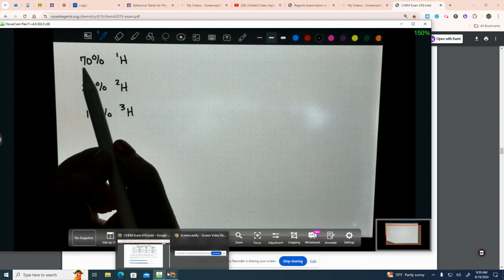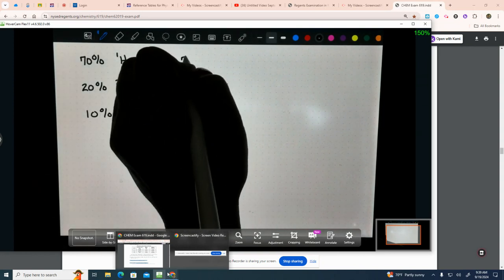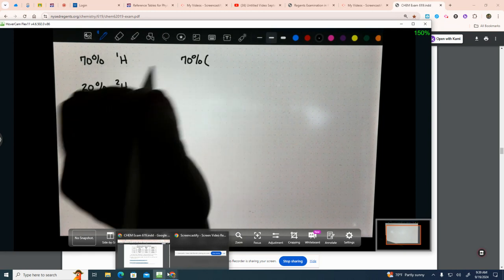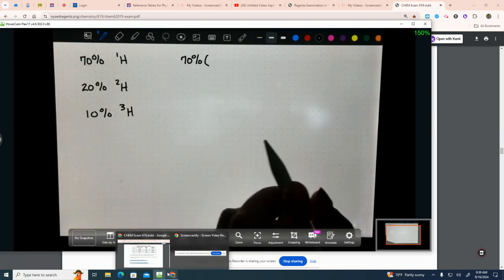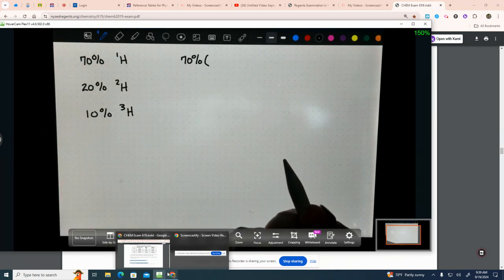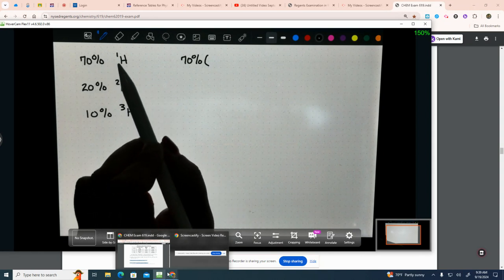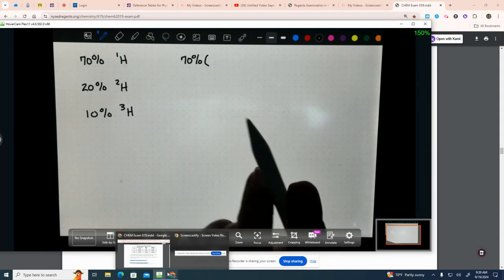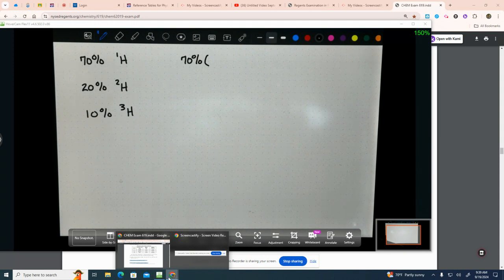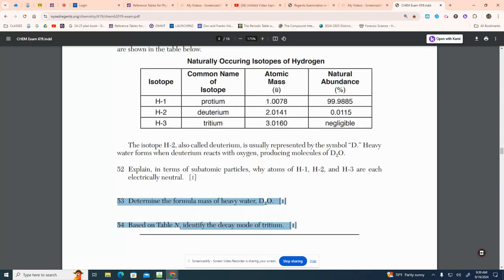You're going to take the percent. In this case, 70%. You're going to multiply it by its mass. Not its mass number. Its mass. I didn't give you a mass, so we're going to use the mass numbers. But they're going to give you a mass. I bet you they gave it to you on here. I don't remember, but let's look. Here's the mass. Not the mass number. Not this number over here. The actual mass.